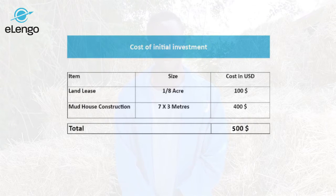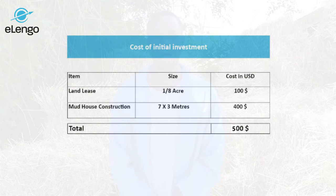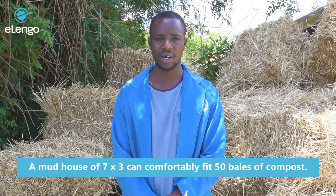Then you have the house. For the house you will need around four hundred US dollars. That is inclusive of the materials needed for building the mud house and the labor that you will incur for its construction. For four hundred US dollars you can construct a mud house of around seven meters by three meters, which will comfortably fit a magnitude of fifty bales of mushroom production compost. These are the two initial investments: land and a good mushroom house, as shown earlier in the mushroom growing house construction lesson.